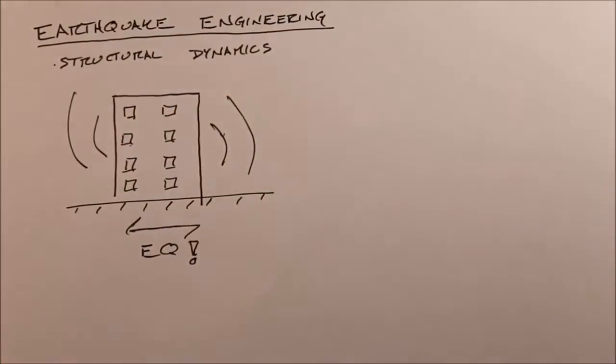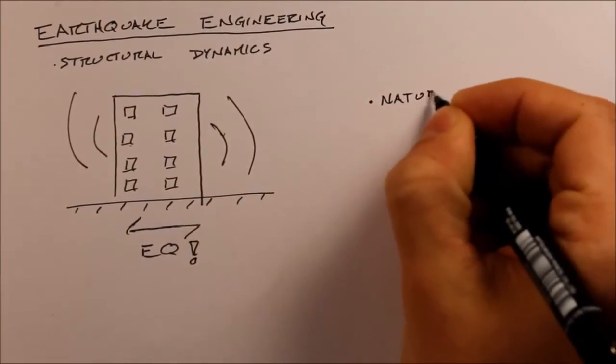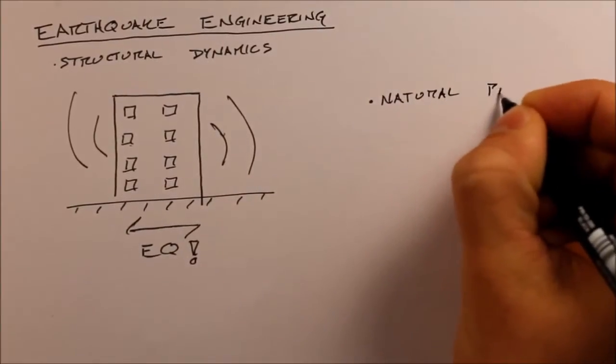What we want to be able to know is, can we predict the forces which are going to go into this building from this earthquake? Can we predict how much it moves? And what we use there, quite commonly as earthquake engineers to predict these forces on the building, is a concept called a natural period of the structure. Natural period.